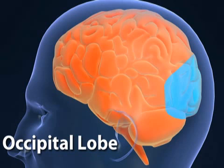The back lobe of the brain is the occipital lobe. It contains brain cells responsible for vision. Seizures in the occipital lobe can produce flashing lights, shimmering lines, or visual hallucinations.